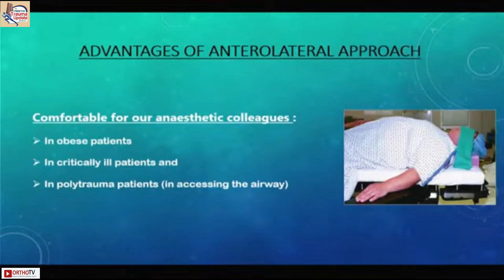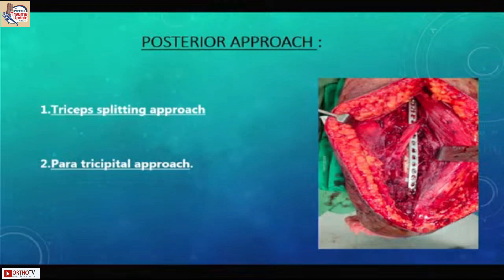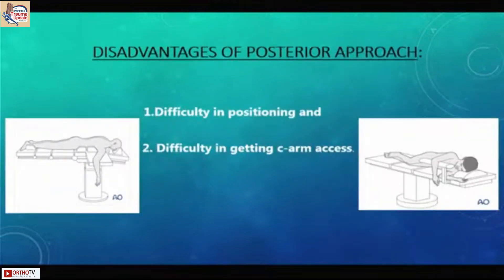In the anterior approach, it is easy for our anesthetic friends to access the airway. The posterior approach has two options: triceps splitting, and nowadays a lot of triceps-sparing approaches such as the para-tricipital approach. The posterior approach requires extensive soft tissue dissection and there is always a risk to the radial nerve when going posteriorly.